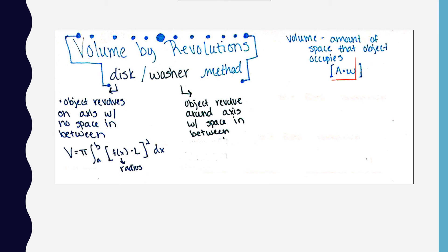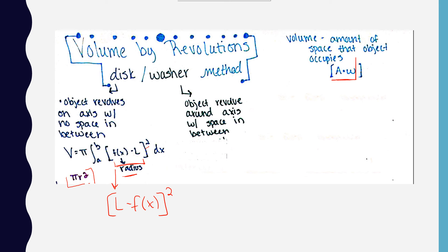To solve for the disk method, you use this formula, which is a rendition of the circle area formula pi r squared — the stuff in the brackets is just our radius. So we have volume equals pi times the integral from a to b of f(x) minus l, squared. f(x) is going to be greater than l in this case. But if l happened to be above f(x), then we would say l minus f(x), squared, because we're still using the upper minus lower concept from area between curves.